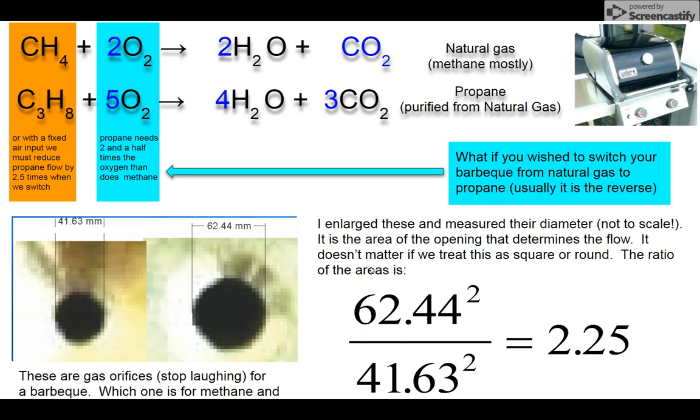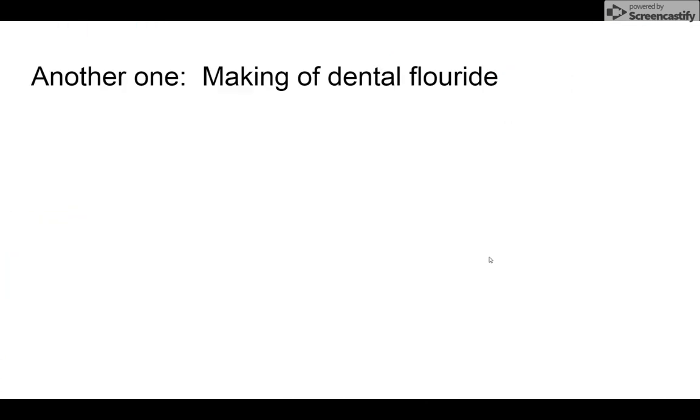When I took a photograph from the Weber website showing the two orifices to change their barbecues over from natural gas to propane, those two holes were one hole was two and a half times bigger than the other one. So this is the equation in the real world setting.